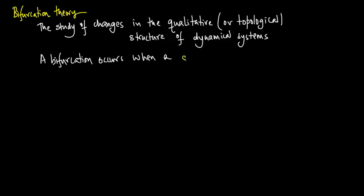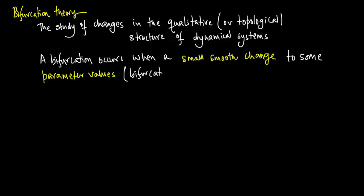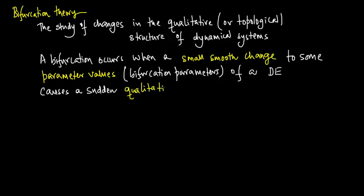A bifurcation occurs when a small smooth change to parameter values, referred to as bifurcation parameters of a differential equation, causes a sudden qualitative or topological change in its behavior.